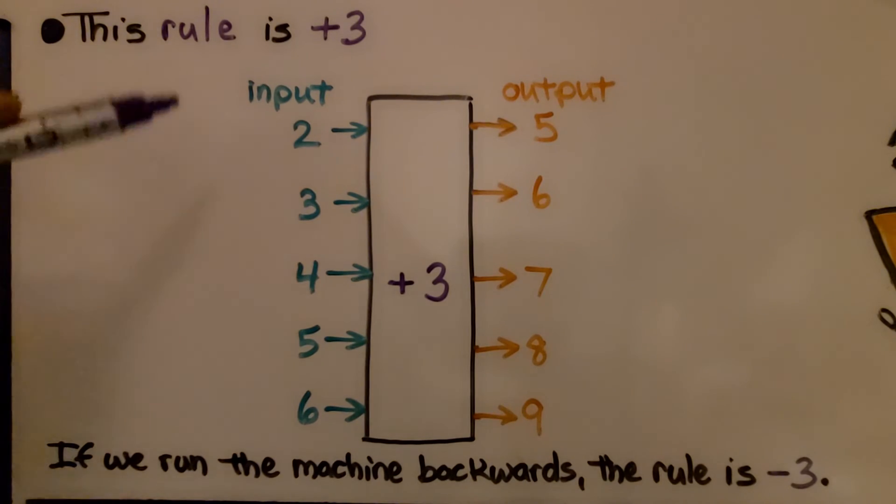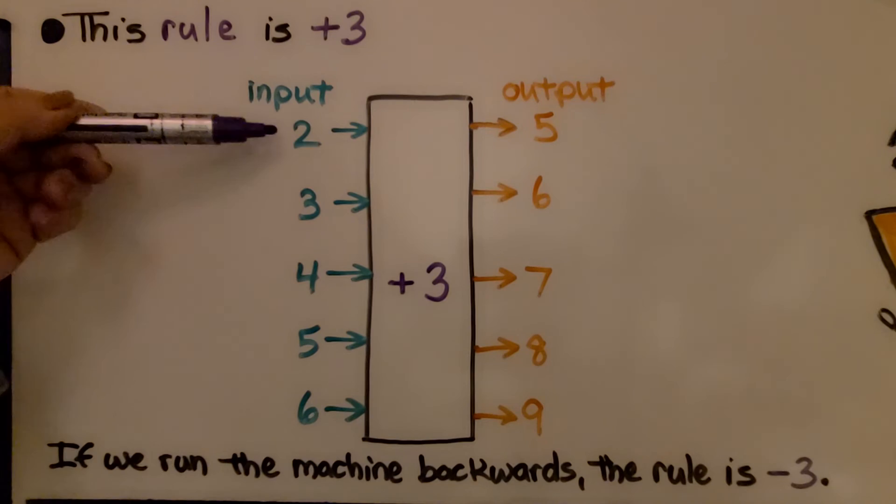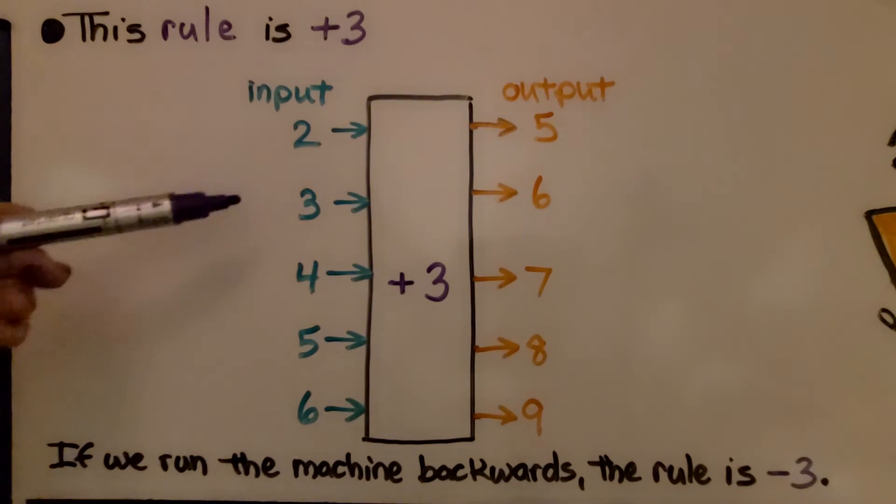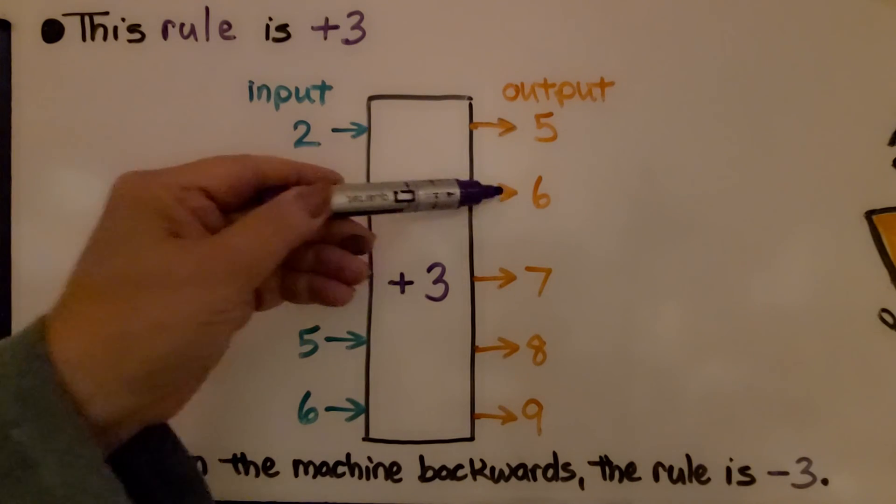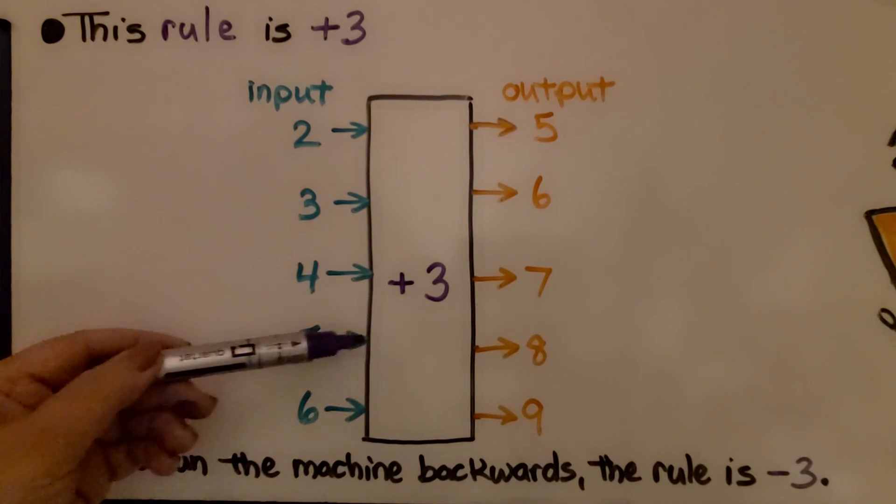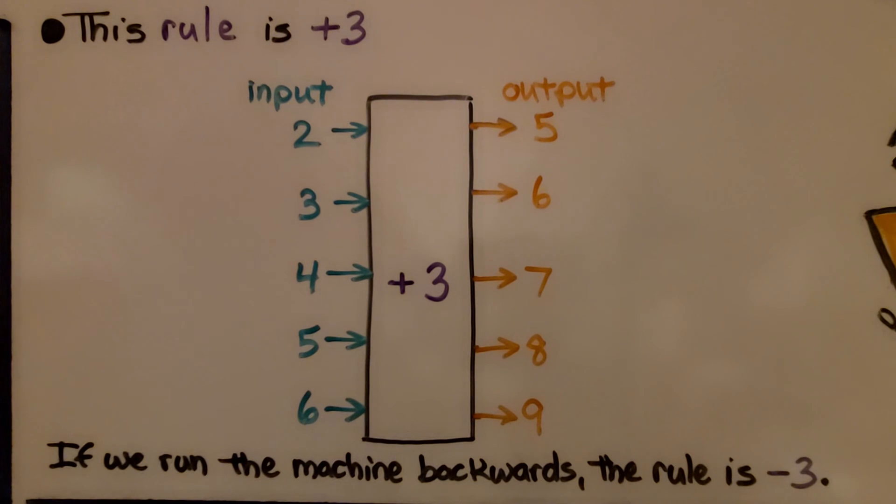The rule here is plus 3. If the input is 2, we have plus 3, our output is 5. If the input is 3, our output is 6. If it's 4, the output is 7. And 5, the output is 8. And 6, the output is 9. If we run the machine backwards, the rule is minus 3. We'd have 5 minus 3 would be 2, and 6 minus 3 would be 3.